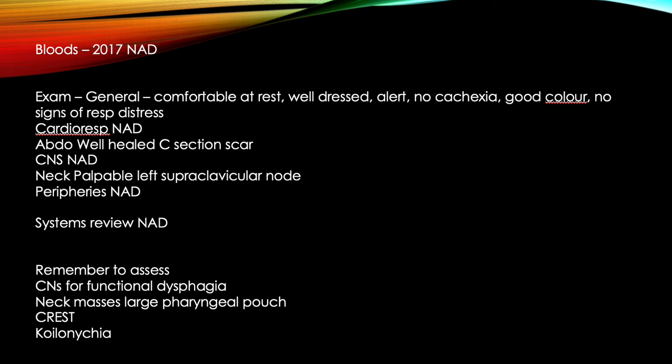We do find a palpable left supraclavicular lymph node. In the peripheries, no swelling or oedema. A full systems review is highly relevant here — checking for things like fainting spells, anything that might give an additional flag. We do a cranial nerve examination for functional dysphagia, check neck masses to rule out a pharyngeal pouch, and look for signs of CREST and koilonychia.